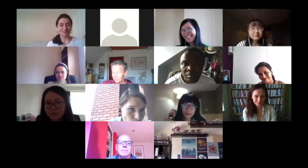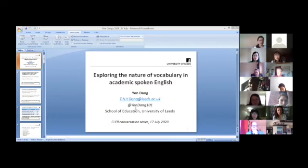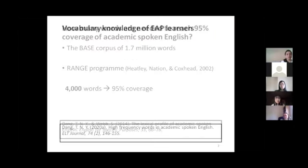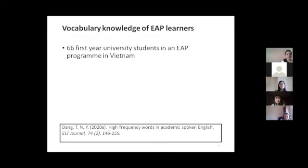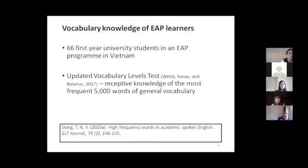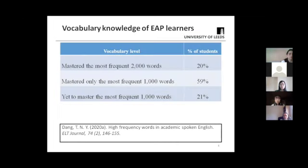Thank you Dana for that, and hi everyone. For today's presentation I would like to share with you some of my findings related to academic spoken vocabulary. I did a study with 66 first-year university students in an EAP program in Vietnam. At the beginning of the program, I asked the students to complete the updated vocabulary level tasks to measure their knowledge of the most frequent 5,000 words of general vocabulary. The result is presented in a table. You can see from the first row that nearly 20% of the participants had mastered the most frequent 2,000 words of general vocabulary.